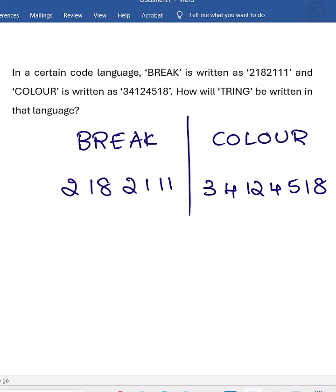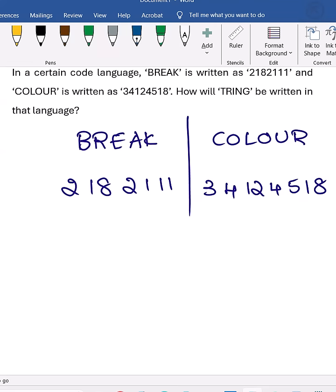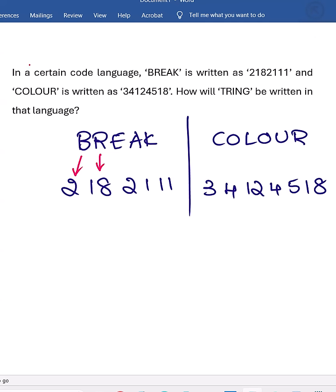A lot of students will just see B value as 2, R value as 18, K value as 11, A value as 1, and with that they'll decide the answer for TRING. So T is 20, R is 18, I is 9, N is 14, G value is 7.